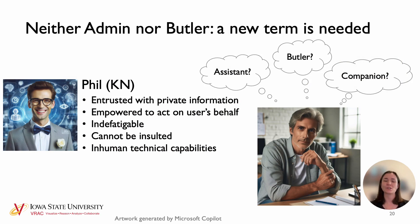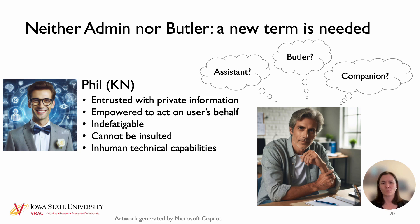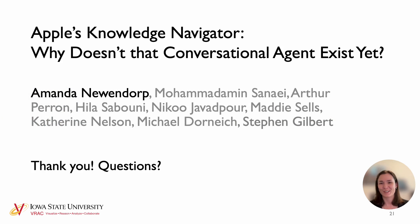The second topic is mental models and terminology. Phil is entrusted with private information and empowered to act on the user's behalf — words like assistant, butler, and companion come to mind, very human roles. But unlike humans in those roles, Phil cannot be fatigued, cannot be insulted, and has inhuman technical capabilities. So what do we call something like that? How can we help ourselves and our users conceptualize this type of relationship? That's one of the questions we'll need to answer as we keep forging on in the world of human-agent teaming.